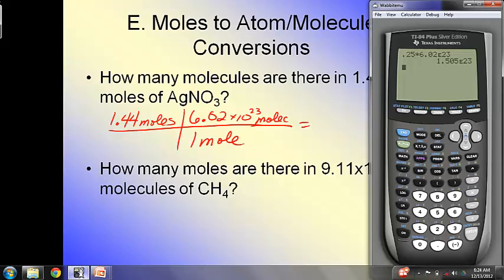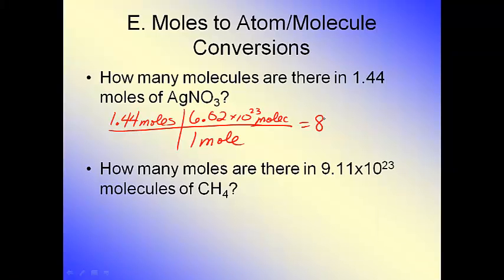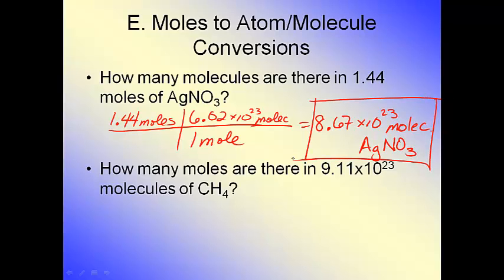So I go to my handy dandy calculator and I say, okay Mr. Calculator, 1.44 times 6.02 second comma E 23 is 8.67 times 10 to the 23rd molecules of silver nitrate. Box it so Mr. Calculator can find it easily on your homework.